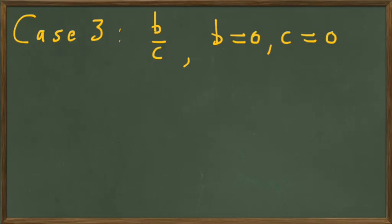Okay, now we're at our Case 3, the case when we plugged our limit x equals a into our function, gotten the fraction b over c, and both the numerator and the denominator are 0. So we have a 0 over 0 limit.